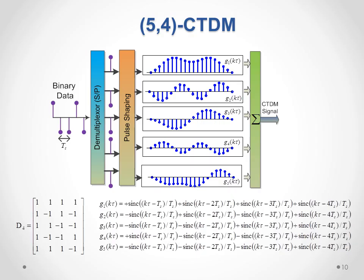Here is an example of CTDM for five data streams. As we see, we can have an additional branch for the fifth data while using the same number of Nyquist pulses — we use four Nyquist pulses to send five data symbols. As we see, the last row of that matrix is different from Walsh codes: all entries are one except the last one which is minus one. We combine these signals to form the CTDM signal.